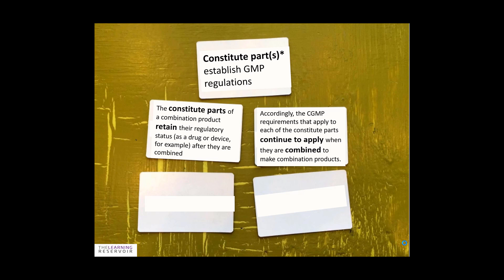For example, in a drug-eluting stent, the drug and the stent come together to form a drug-eluting stent. Our constituent parts in this case are our drug and our medical device or stent. Accordingly, the CGMP requirements for a medical device must be adhered to, and for a drug must be adhered to, when you're manufacturing a drug-eluting stent in a facility. So you must implement the rules for both drug CGMPs and medical device GMPs.